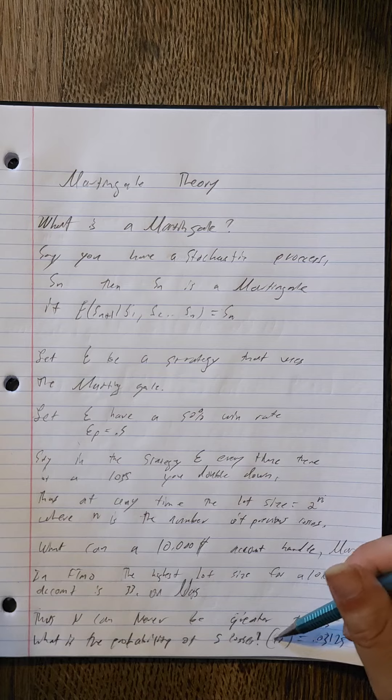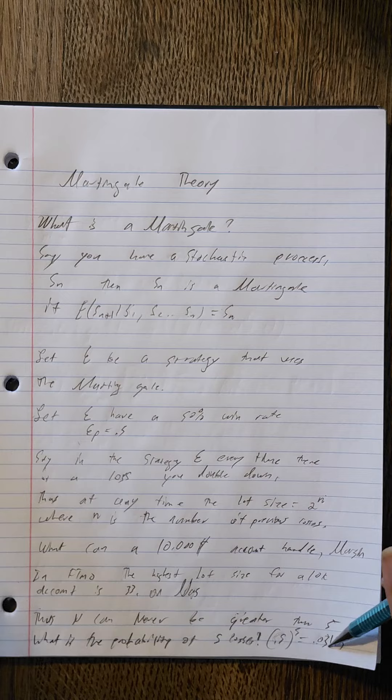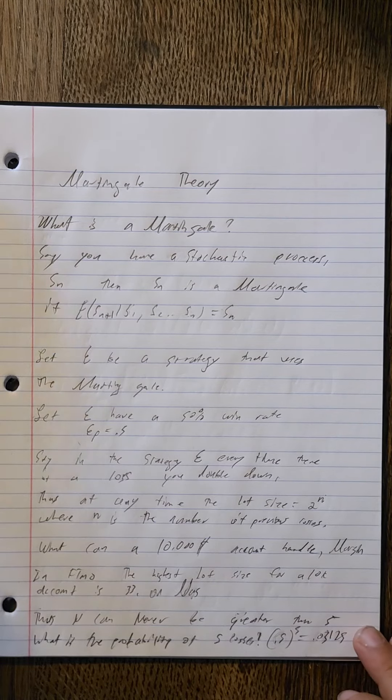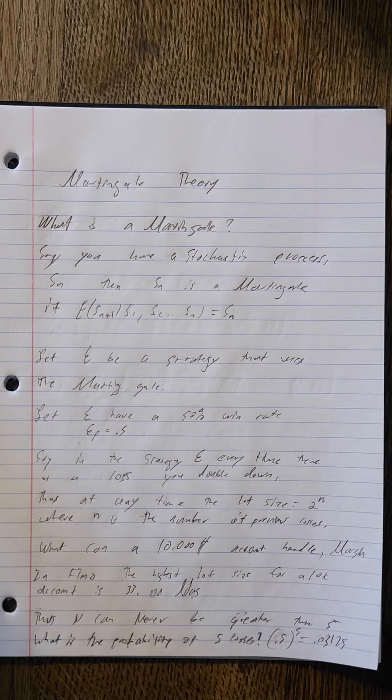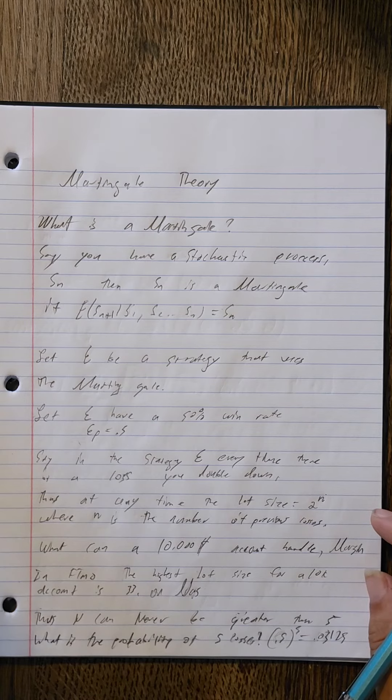What is the probability of five losses consecutively? So we just take the probability of loss and we raise it to the five, and we see that there is a 0.03125 chance, or a 3.125 percent chance, that the martingale will tank our account.